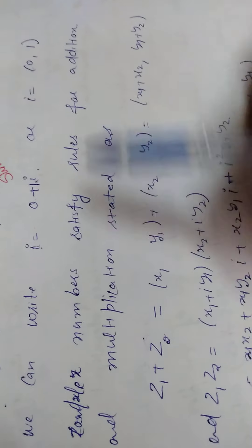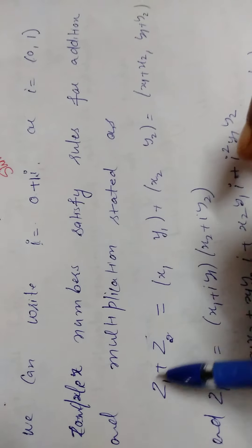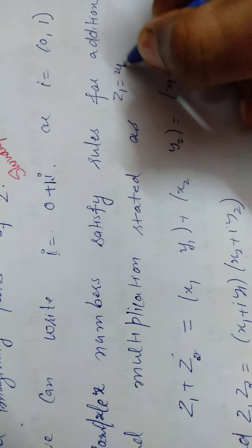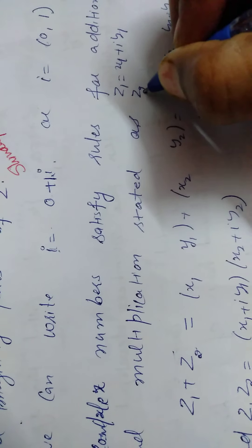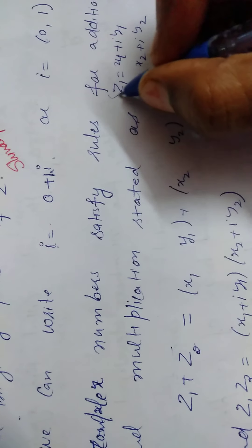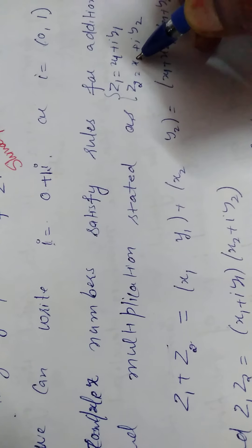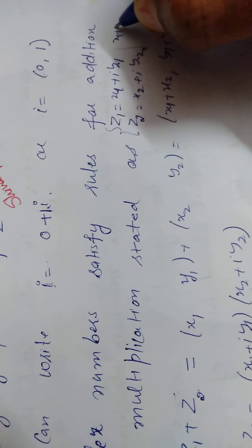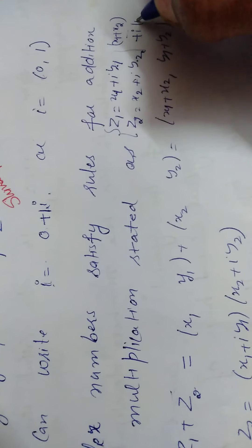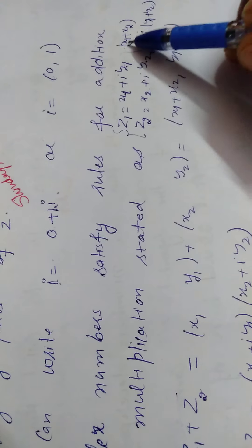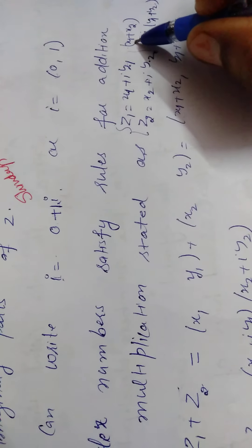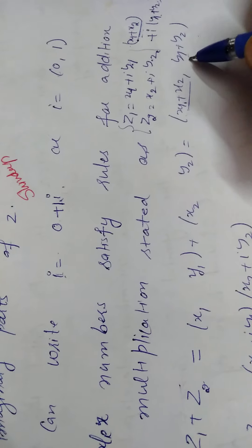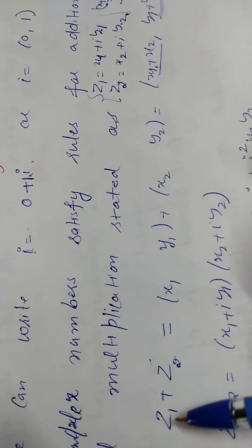Now let us discuss the addition and multiplication properties. Let z1 and z2 be two complex numbers: z1 equals x1 plus iota y1 and z2 equals x2 plus iota y2. To add two complex numbers, we add the real part to the real part and the imaginary part to the imaginary part: z1 plus z2 equals (x1 plus x2) plus iota (y1 plus y2), or as an ordered pair, (x1 plus x2, y1 plus y2).